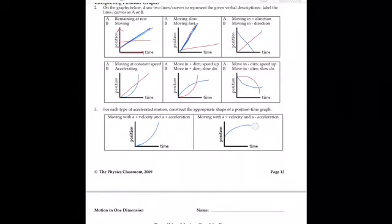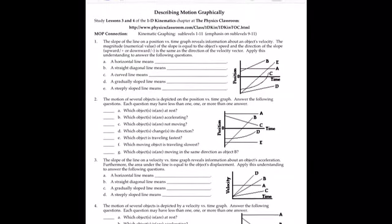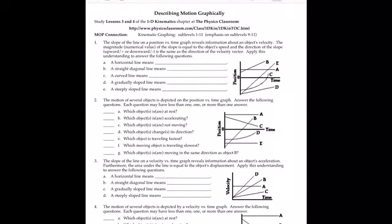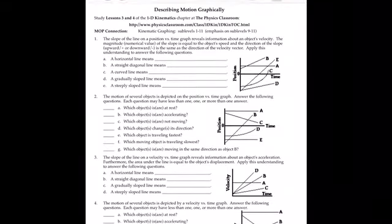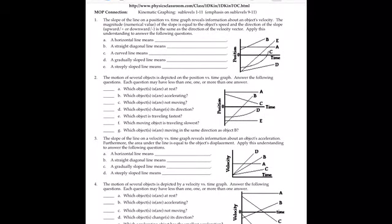Now this last page has really great information. The slope of a line on a position versus time graph reveals information about an object's velocity. The magnitude — the numerical value — of the slope equals the object's speed, and the direction of the slope, upward or downward, is the same as the direction of the velocity vector.